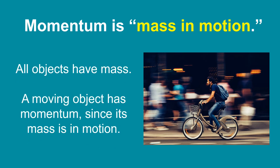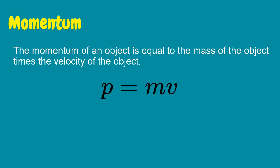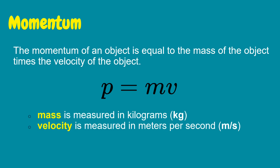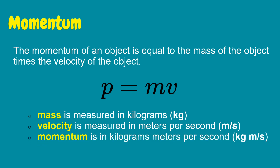All objects have mass. A moving object has momentum since its mass is in motion. The momentum of an object is equal to the mass of the object times the velocity of the object, or simply P is equal to M times V, where mass is measured in kilograms, velocity is measured in meters per second, and momentum is in kilogram meters per second.